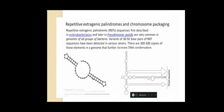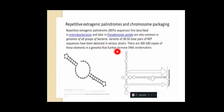Repetitive extragenic palindromes (REPs) and chromosome packaging: palindromes are sequences that read the same in both directions. REP sequences were first described in Enterobacteria and later in Pseudomonas putida, and are very common in genomes of all groups of bacteria. Variants of 30 to 50 base pairs of REP sequences have been detected in various strains. There are 300 to 1000 copies of this element in a genome, which further increases DNA condensation.